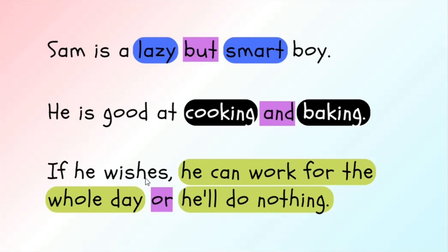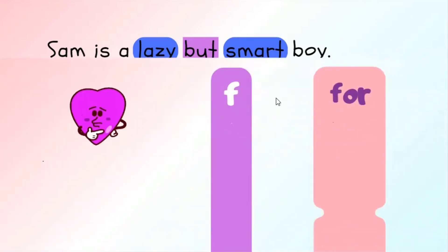In the last example: 'If he wishes, he can work for the whole day or he'll do nothing.' Look at this sentence — 'He can work for the whole day' is a complete sentence; it's an independent clause. And 'He'll do nothing' is also a complete sentence. But in this sentence, we are joining these two clauses with the coordinating conjunction 'or.' This is how coordinating conjunctions connect like to like.